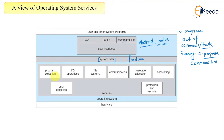We have a set of services provided by the operating system. These can be: execution of a program, input-output operations, file system operations such as creation and deletion of files, IPC (inter-process communication), resource usage, accounting, detection, and protection and security.